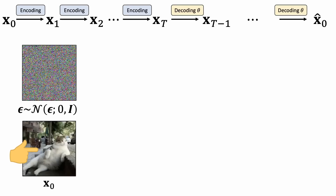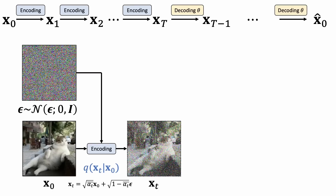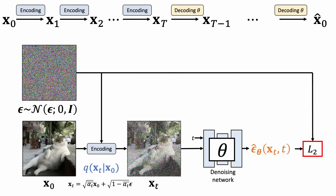We sample a clean image from a dataset and a noise image from a Gaussian distribution. We encode the image with a forward diffusion step into a noisy image. We then train the model to predict what noise has been added to our clean image.